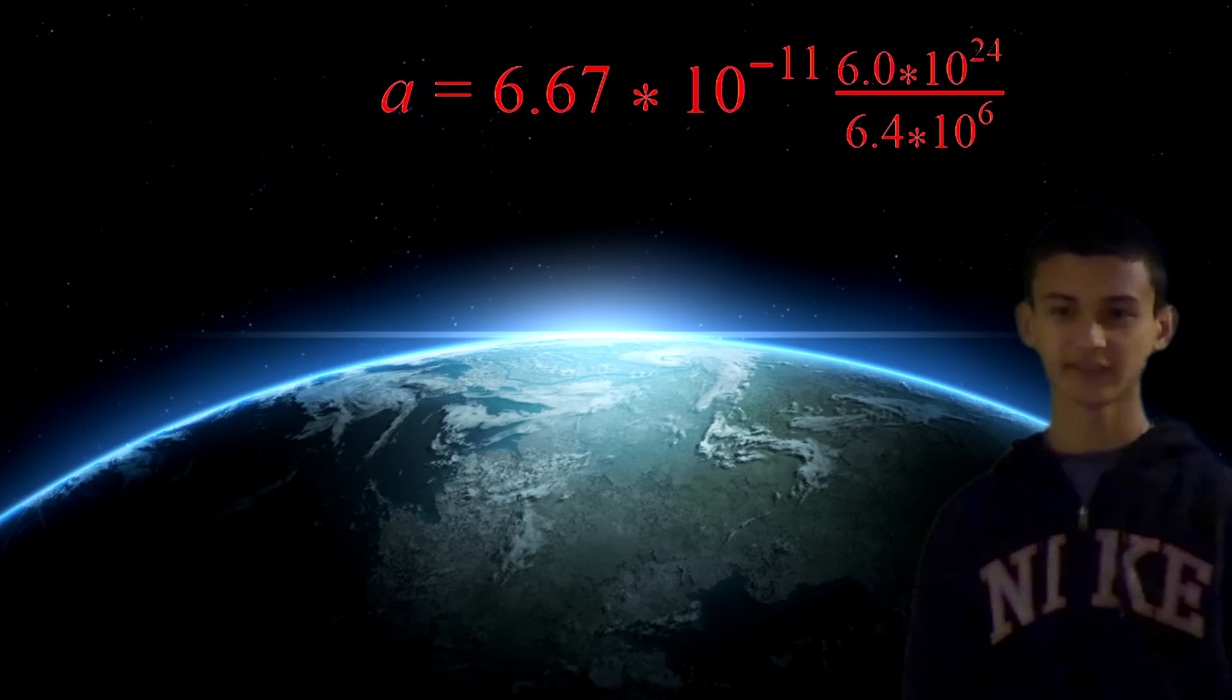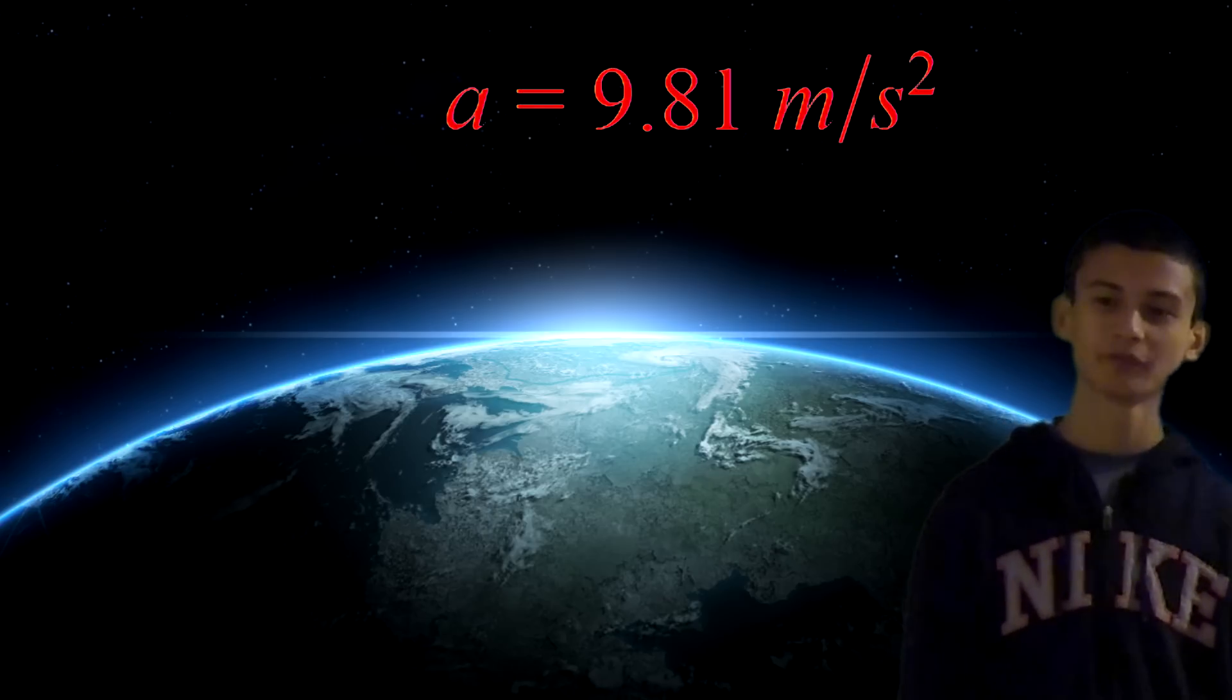If we plug the mass of the Earth and the radius of the Earth into this equation, we get a equals 9.81 meters per second squared.